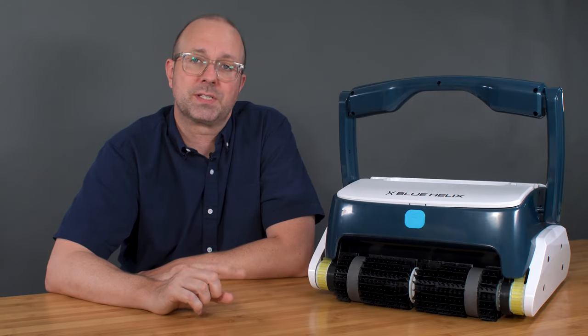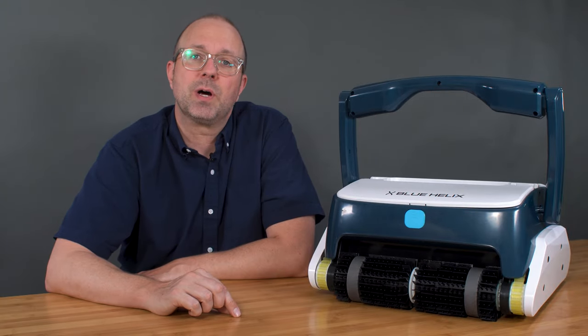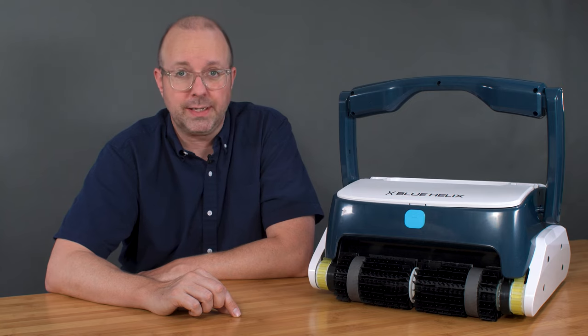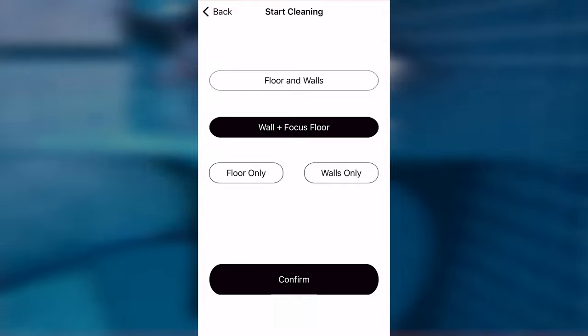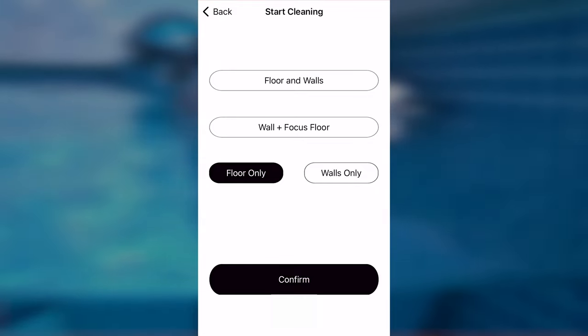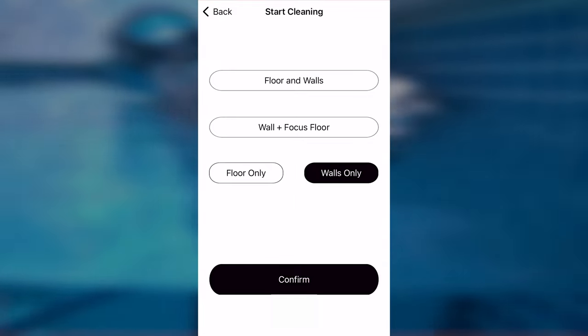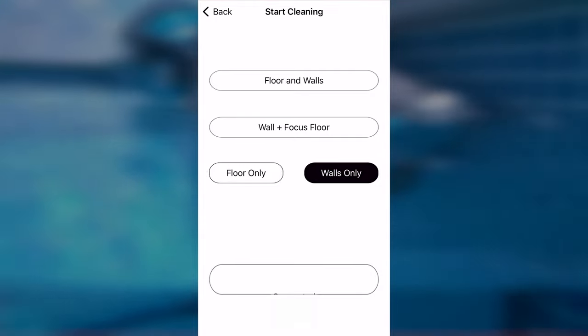First, focus cleaning. Focus cleaning mode allows you to focus where your robot cleans. Whether you want both floors and walls, floors only, walls only, or walls with an emphasis on the floor, it gives you a variety of options to choose from to fit your pool's needs.